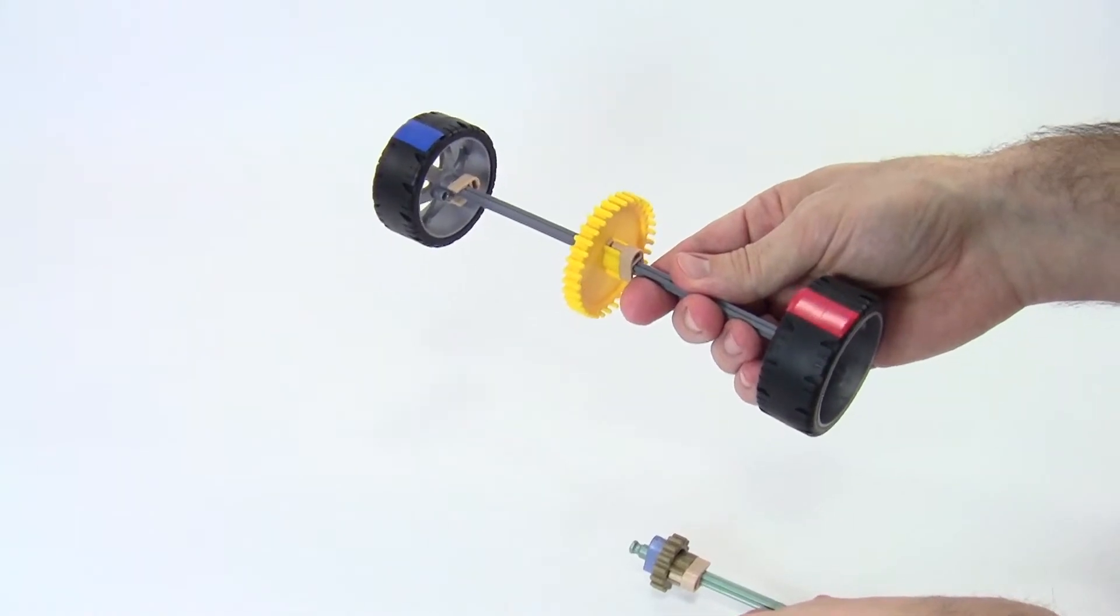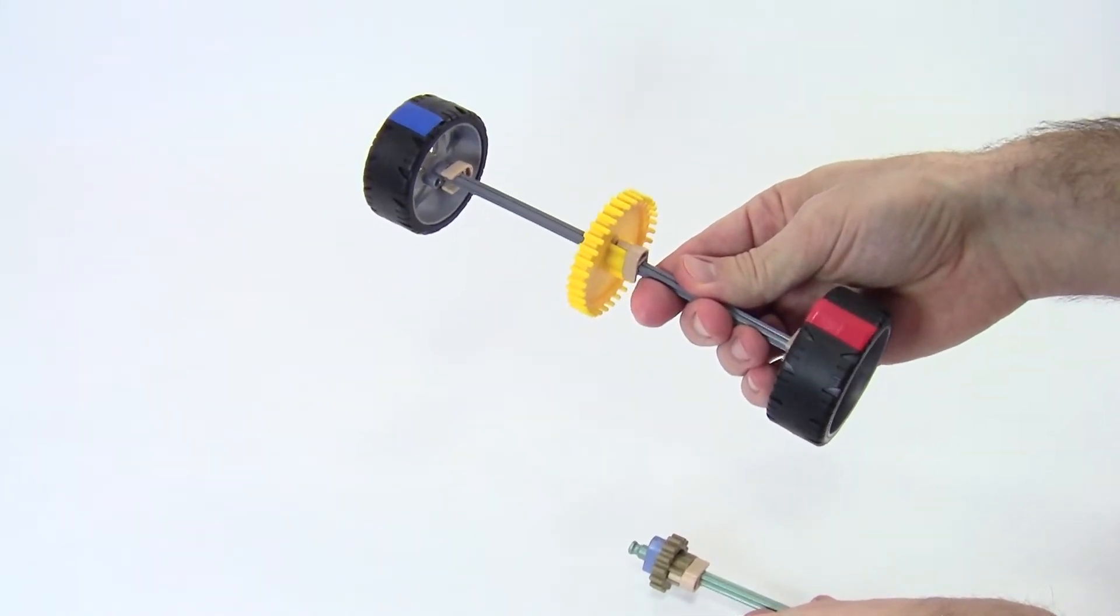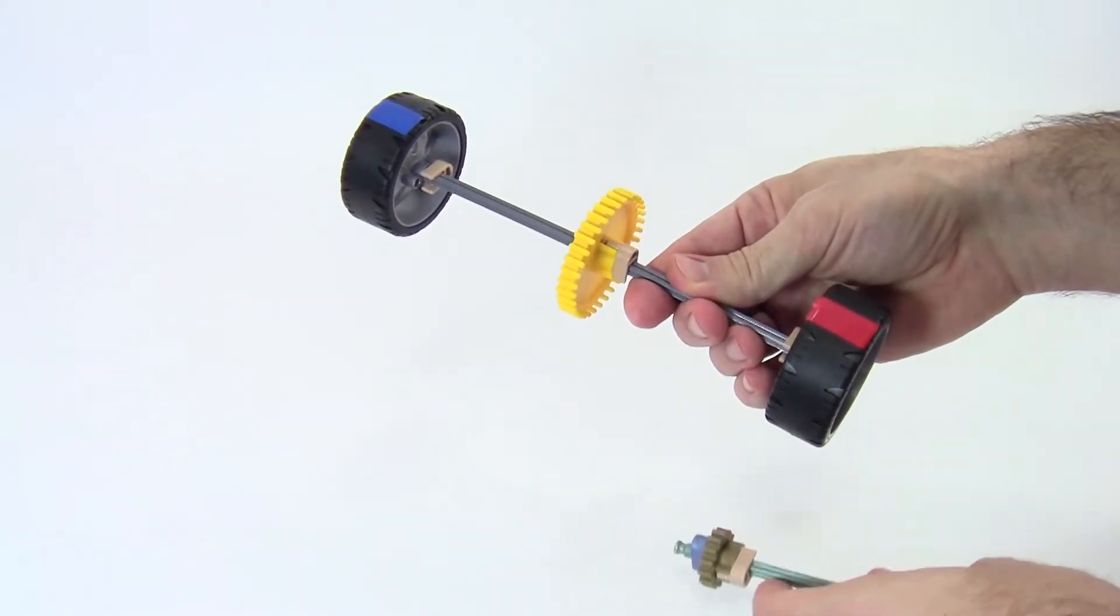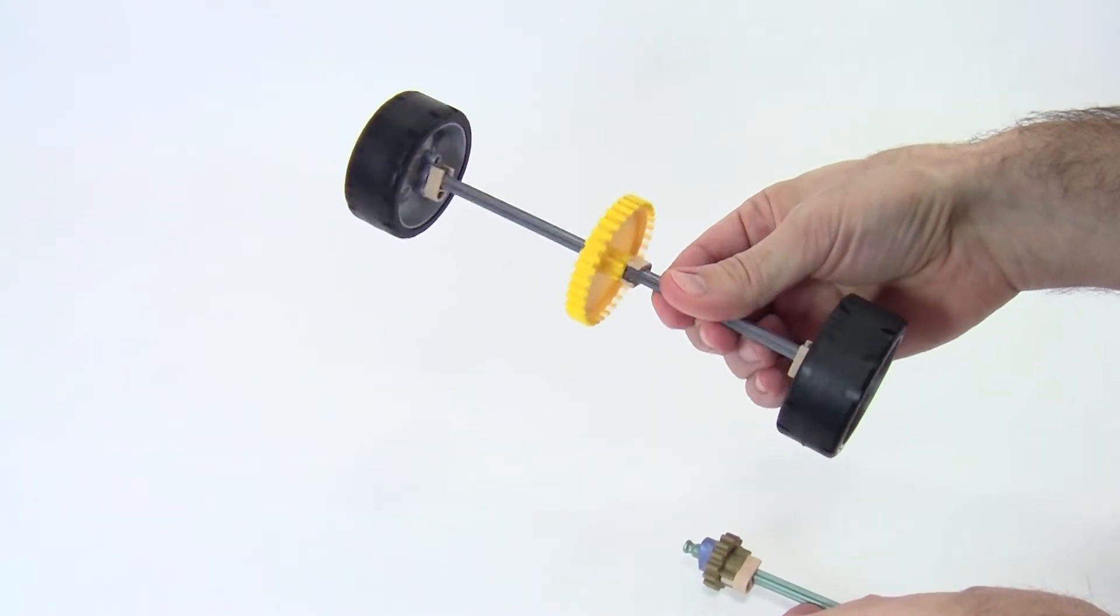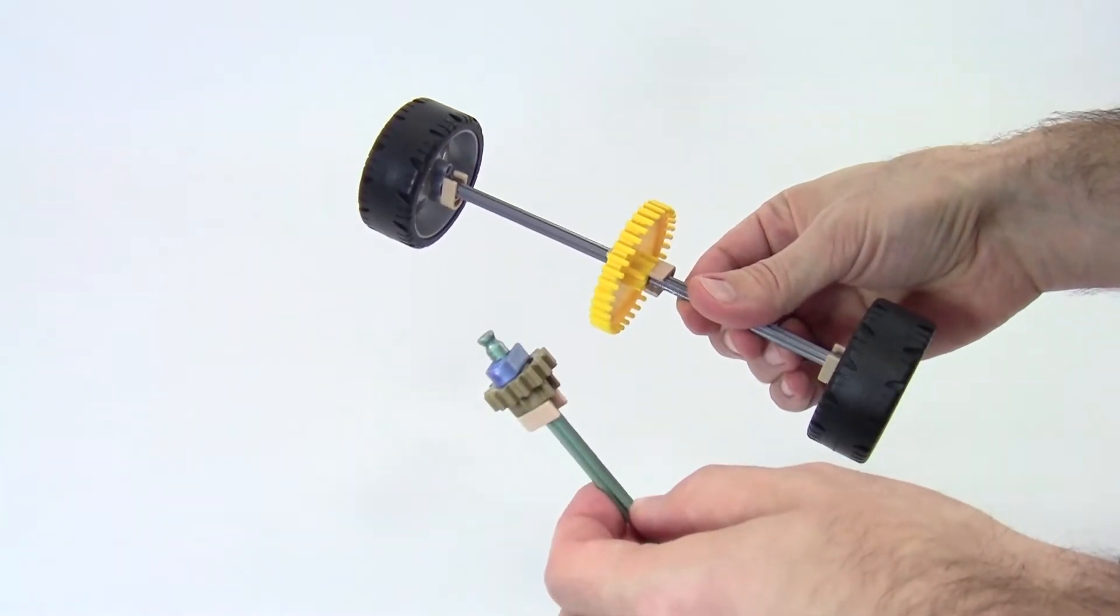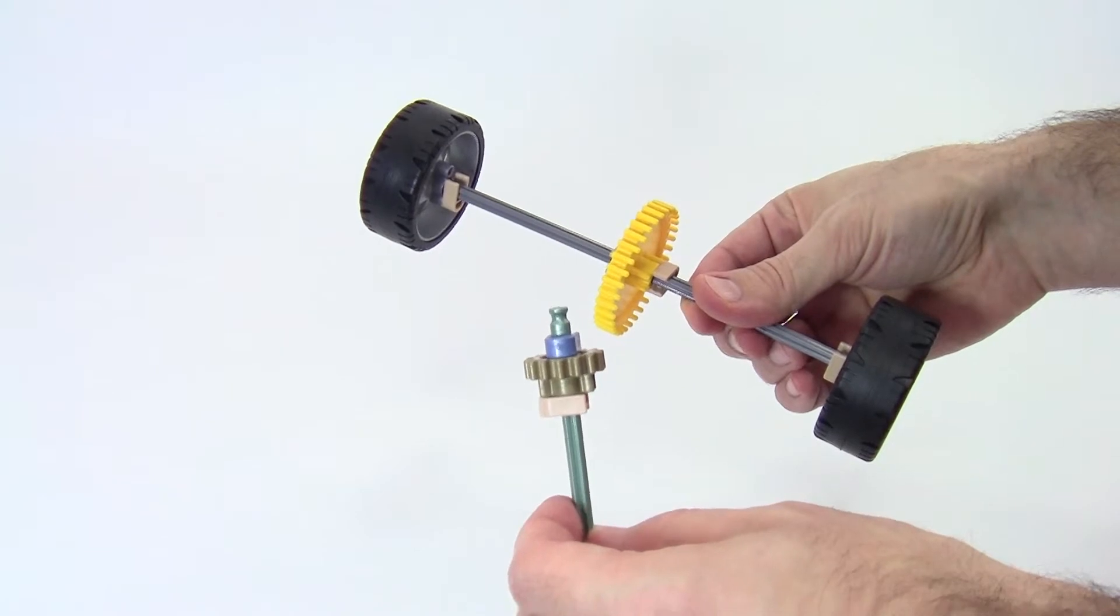This becomes a problem, however, in a vehicle with a powered axle like a car. Here, both wheels are now fixed to the axle and rotate with it. The axle is driven by a drive shaft which is connected to the engine.